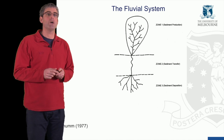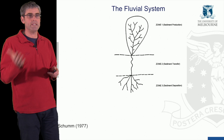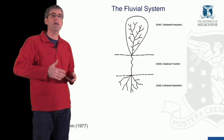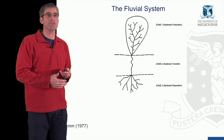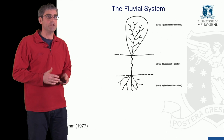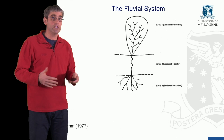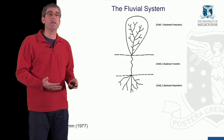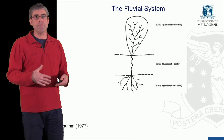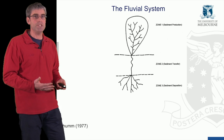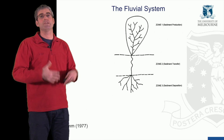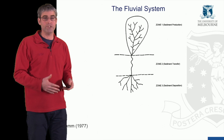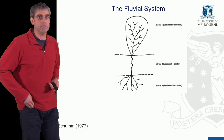Zone 2 is the sediment transfer zone, where sediment is supplied from upstream and passed on downstream without much change in the total sediment load — the amount of sediment transported within the channel through that reach. Then we have Zone 3, the deposition zone, where sediment is generally deposited on the floodplain or along the channel. This is generally a low gradient river zone.